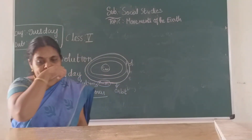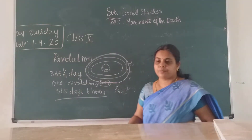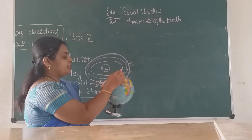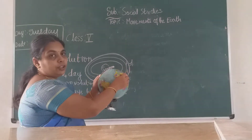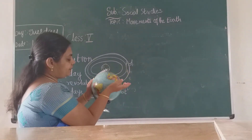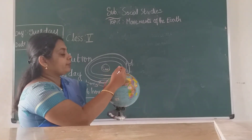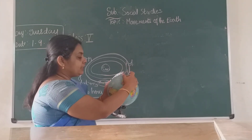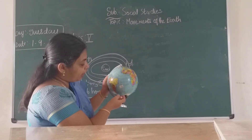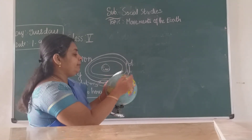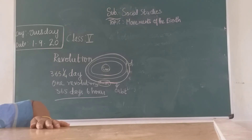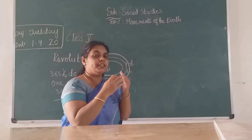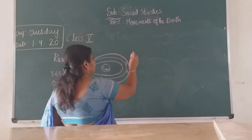As the earth completes its revolution, its tilted axis points towards or away from the sun. The hemisphere closer to the sun's rays gets more sunlight, while the hemisphere farther away gets less sunlight. Depending on how the sun's rays fall on the earth, we have four different seasons.